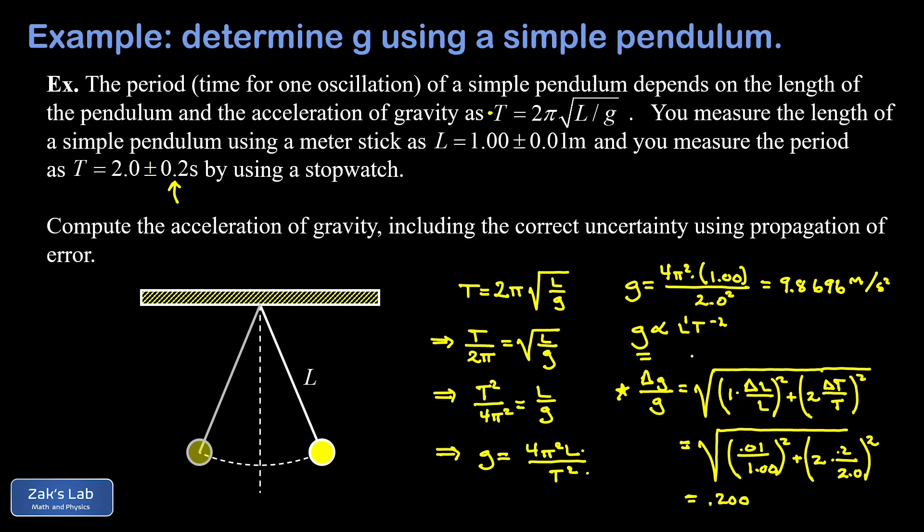To wrap things up, we have to solve for delta g, and then express g with its proper uncertainty. We found that delta g over g was 0.200, and this means delta g, or the uncertainty in g, is 0.200 times g. And we calculated g to be 9.8696 meters per second squared. So we arrive at an uncertainty of about 1.97 meters per second squared. That's the proper plus or minus to put on this result that we got for g.